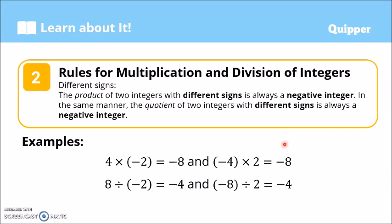Rules for multiplication and division of integers when they have different signs: unlike signs. The product of two integers with different signs is always a negative integer. When signs are the same, the answer is positive; when signs are different, the answer is negative. This rule also applies to the quotient of two integers, meaning it covers both multiplication and division of integers. So with different or unlike signs, the answer is always a negative integer.